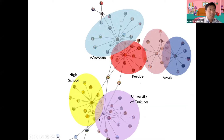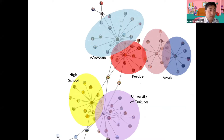Facebook does not allow me to extract all my connection data, but if I could see the entire network, it would clearly show how my relationships were built — with groups related to one another based on academic, professional, and personal activities — from which we can visually see my lifelong socialization process.